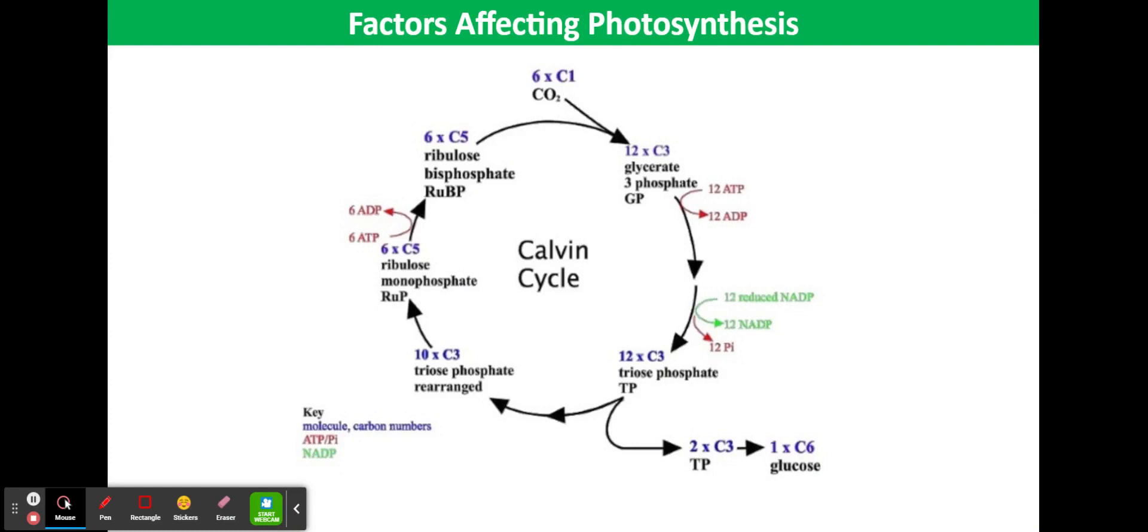The effects of changing temperature on the Calvin cycle are from low temperatures to temperatures of 25 to 30 degrees. If plants have enough water and carbon dioxide and a sufficient light intensity, the rate of photosynthesis increases as temperature increases.